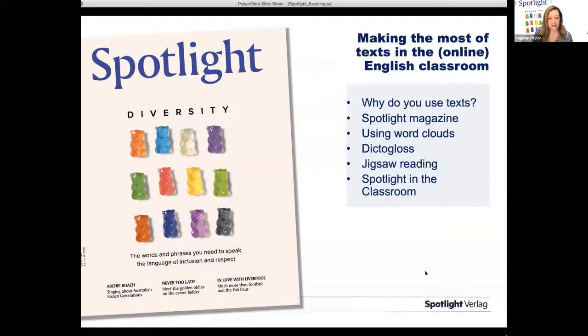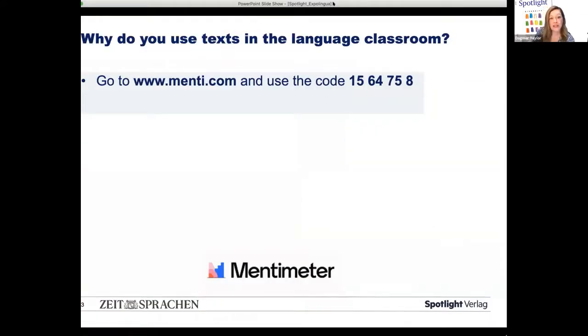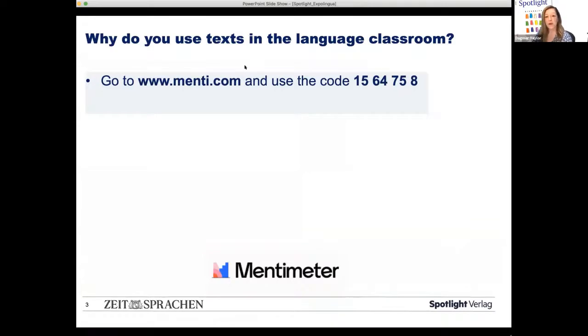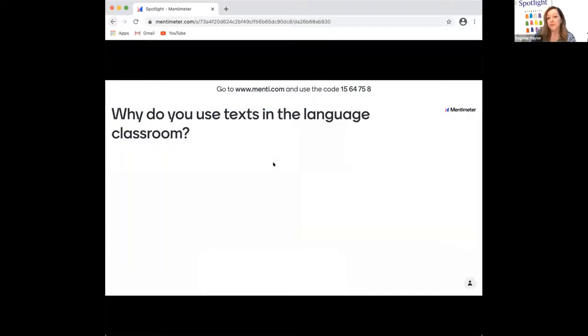Let's see. So first, I'm going to ask you to go to Mentimeter or menti.com. You can open it in a browser, or maybe you have the app and answer this question. Let me just share the slide. So you should be able to see the answers coming in. So if you go to menti.com and use the code at the top here, 15 64 75 8, then you should be able to answer the question that why do you, you specifically use texts in the language classroom? I'd like to know. And then hopefully, these answers will be visualized in the Mentimeter screen. And so we can have a look at what your ideas are.